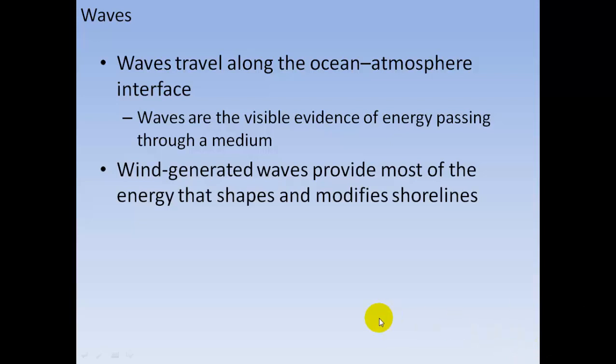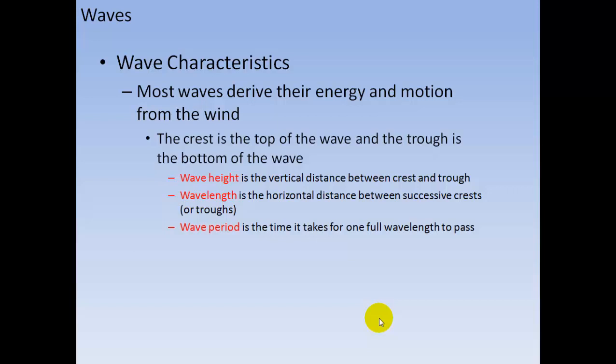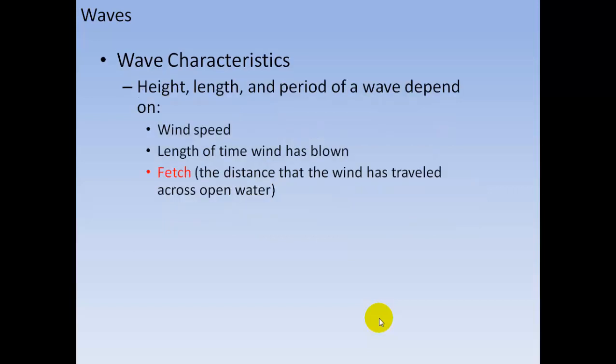Waves travel along the ocean-atmosphere interface and are the visible evidence of energy passing through a medium. Wind-generated waves provide most of the energy that shapes and modifies shorelines. The crest is the top of the wave and the trough is the bottom. Wave height is the vertical distance between crest and trough. Wavelength is the horizontal distance between successive crests. Wave period is the time it takes one full wavelength to pass. Height, length, and period depend on wind speed, length of time the wind blows, and fetch — the distance wind has traveled across open water.